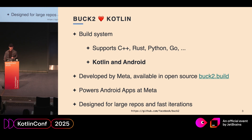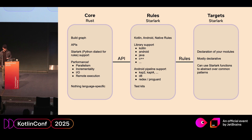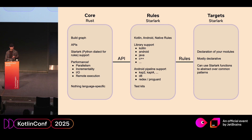The build system Buck2 is designed for large monorepos but can handle a small project as well. Our huge Android focus is the ability to iterate and build really fast. At a high level, Buck2 architecture consists of three layers. Core, which is the language-agnostic part of the system — it runs the build graph, manages the language users write rules in, and is responsible for overall ecosystem performance, parallelism, incrementality, IO, and remote execution.